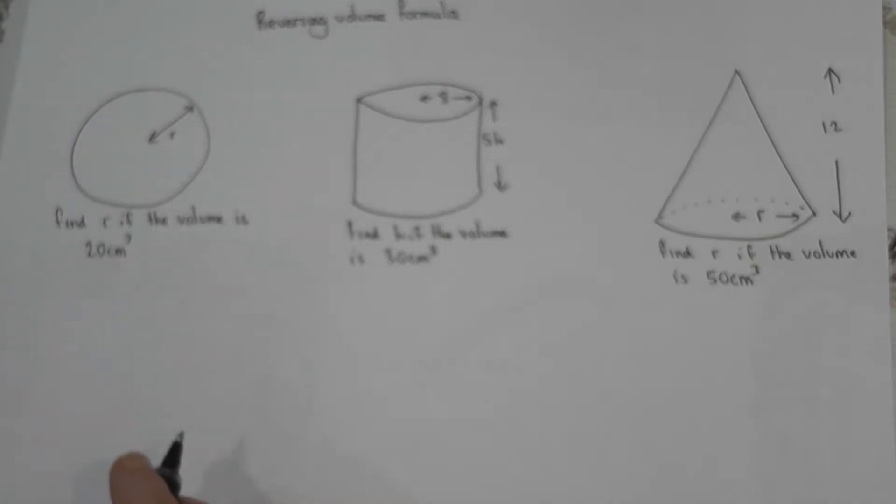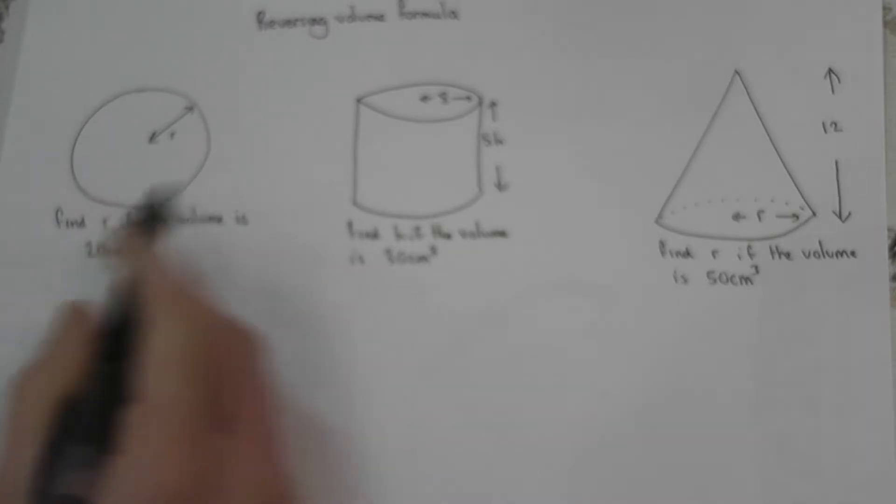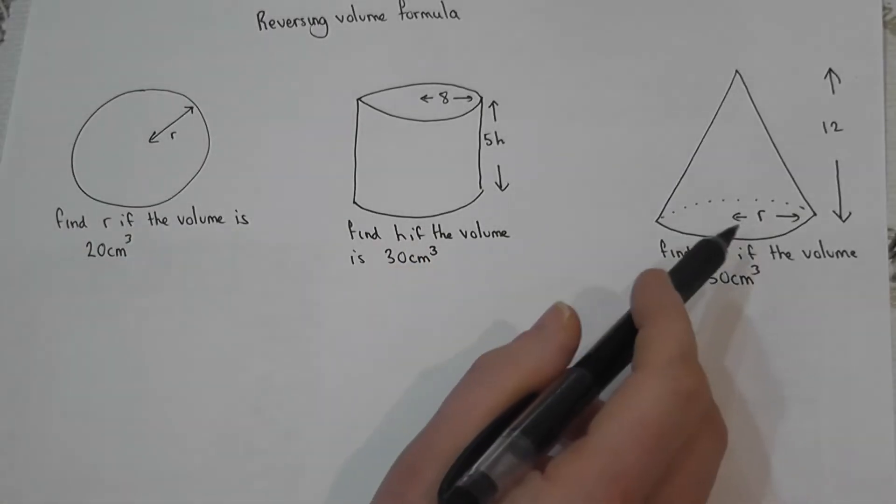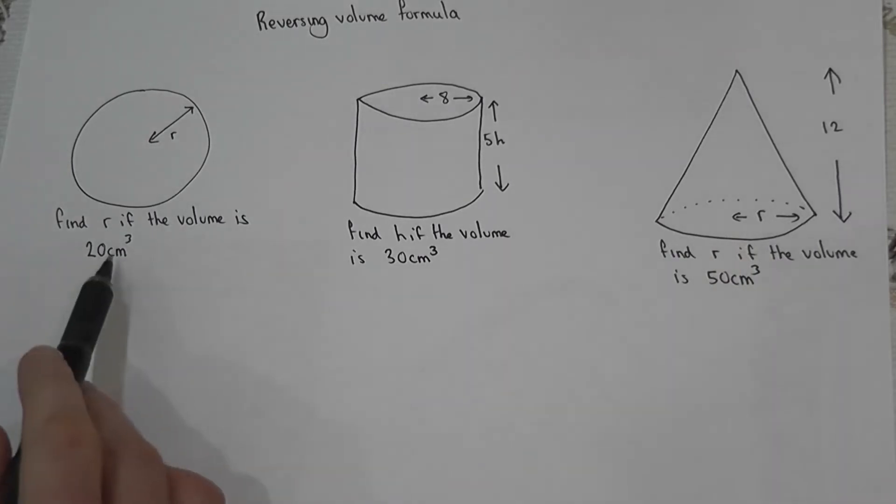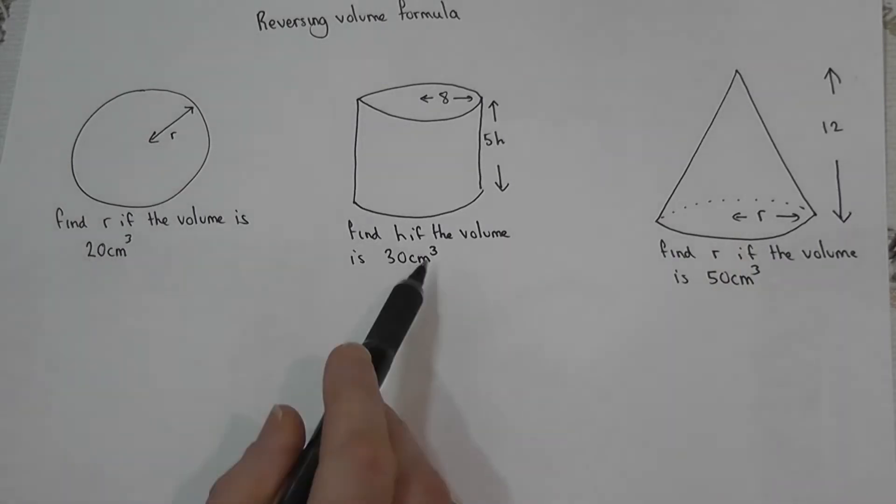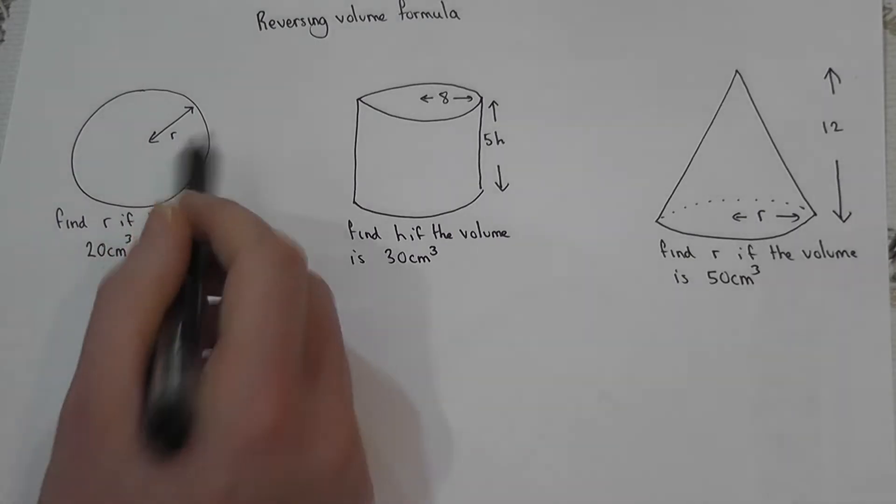This video looks at reversing volume formulas. We have here a sphere, a cylinder, and a cone. We're told the volume of each of the shapes is 20, 30, and 50, and we have to work backwards to find out a missing measurement.